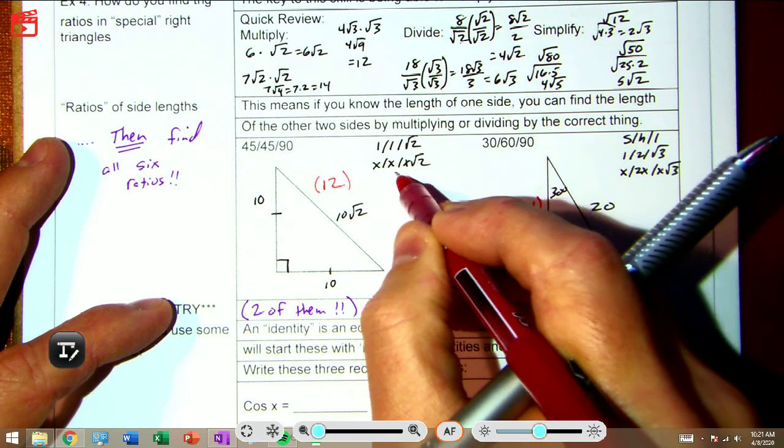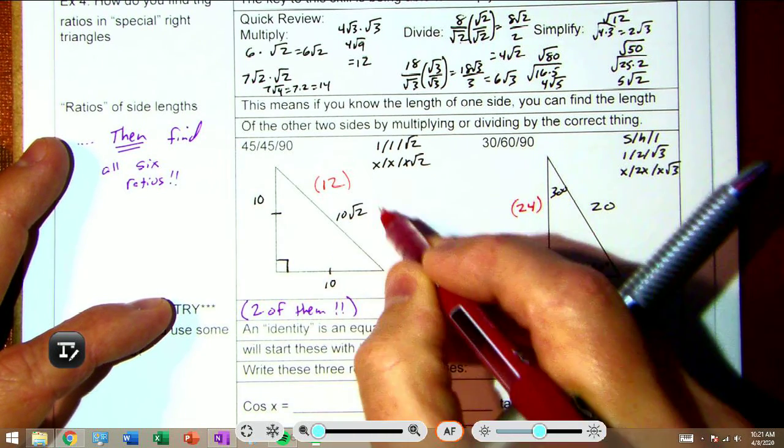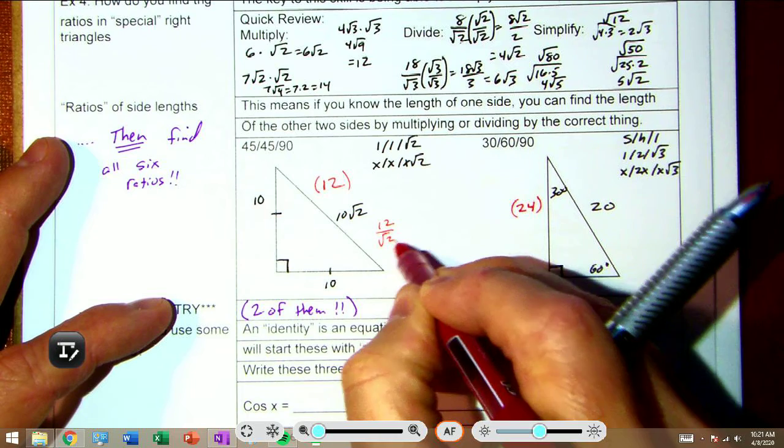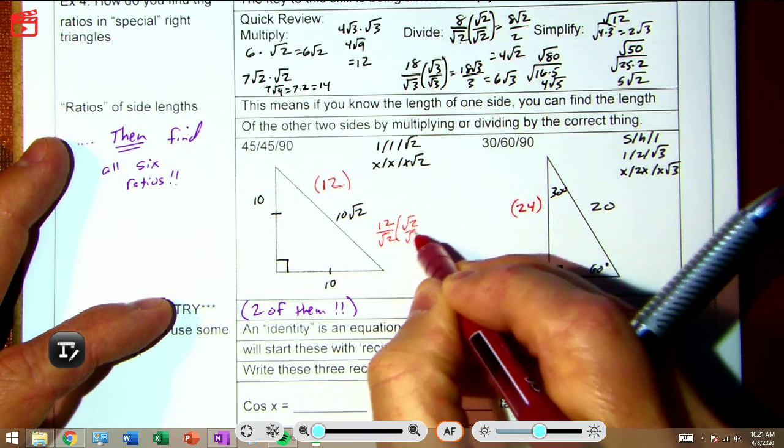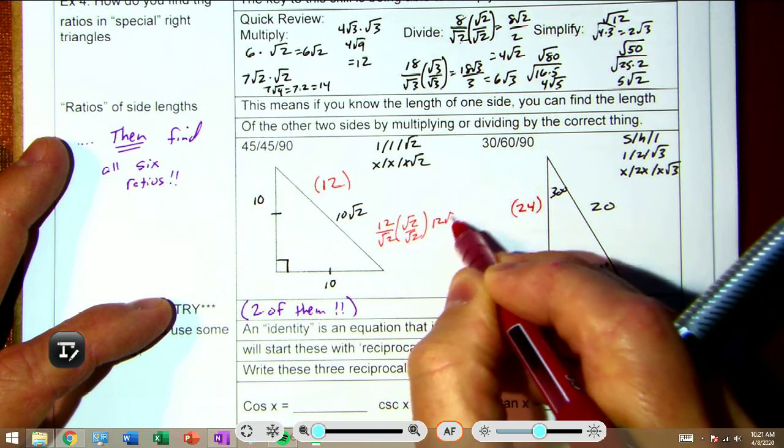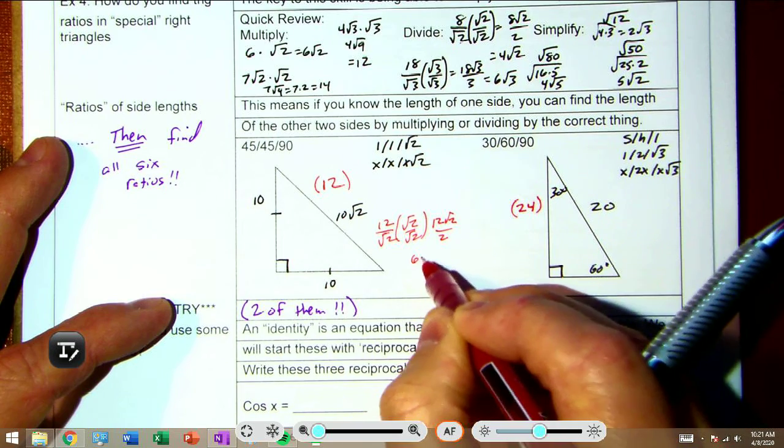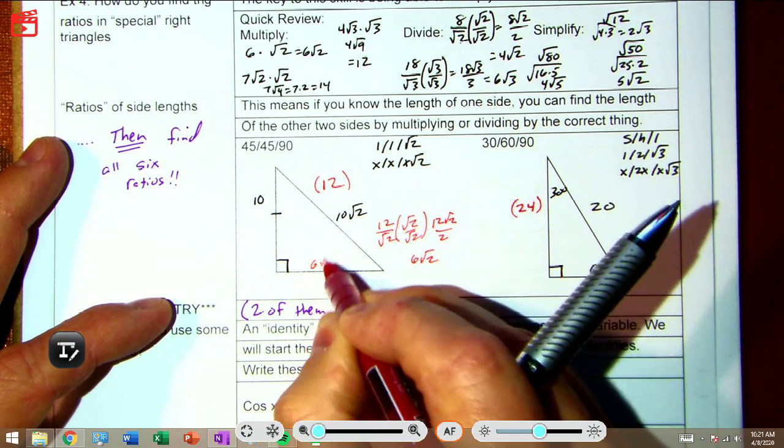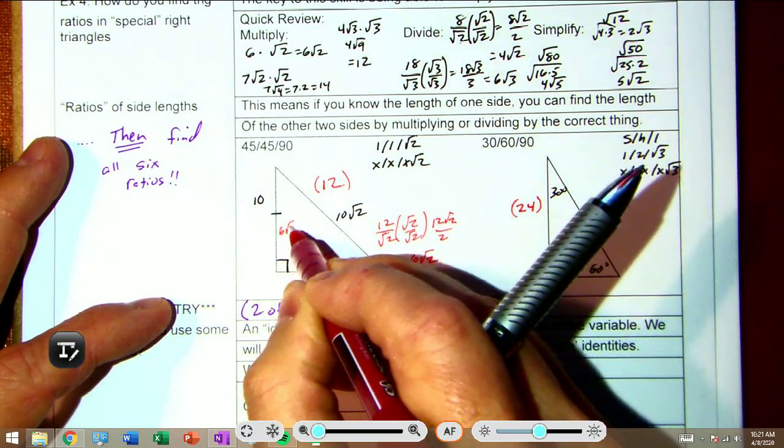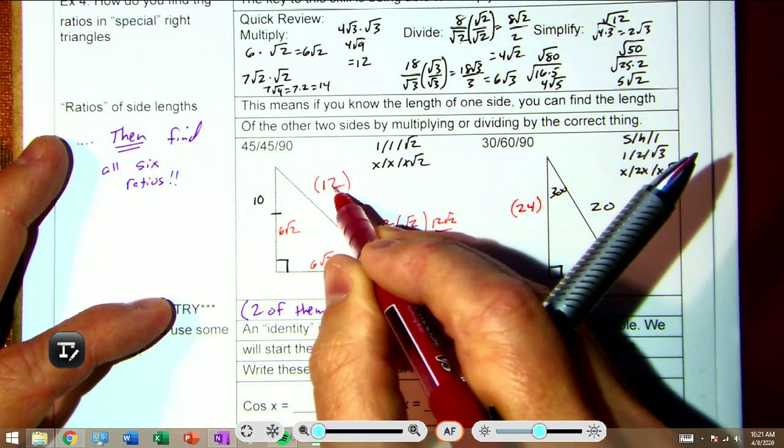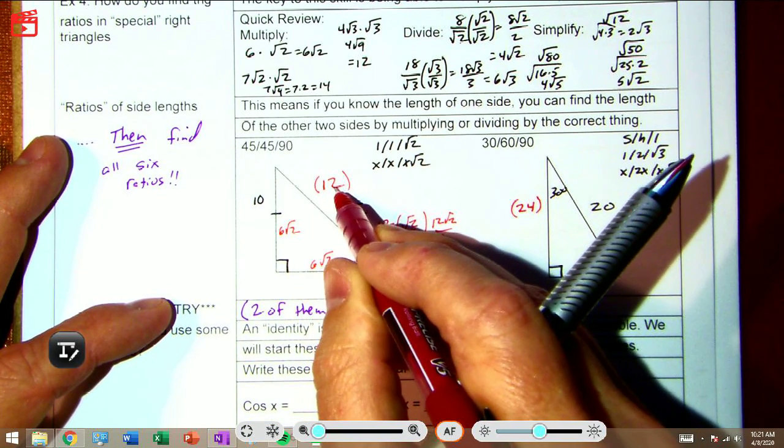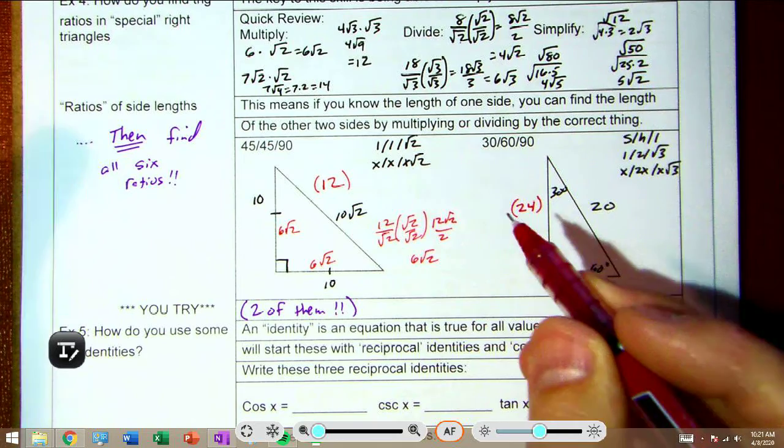If you're given the hypotenuse, just like I did right up here, you divide by √2 to find out what the leg is. So what's 12 divided by √2? Well, again we have to rationalize: 12√2 over 2, which is 6√2. That would mean the legs of this 45-45-90 would be 6√2 if the hypotenuse was 12.